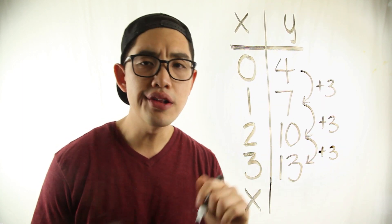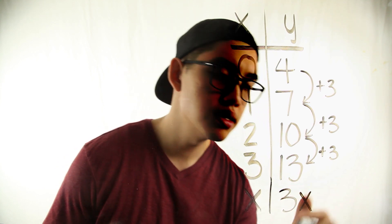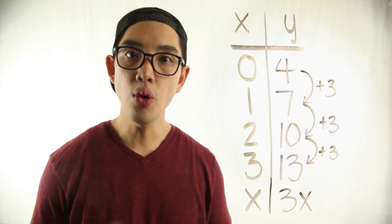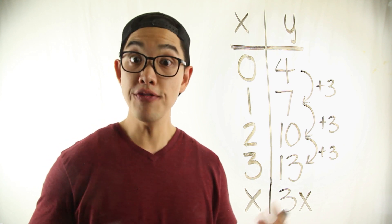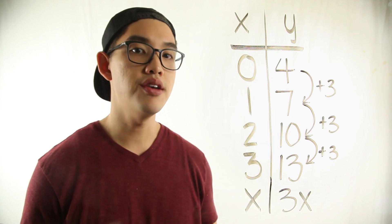So my function rule is probably gonna look something like this: three times the number x. But wait, I need to add or subtract one more number. To find that out I can take a look at the zero right here and the number next to zero. Ah, I see four.